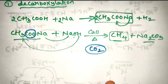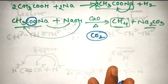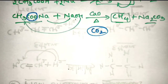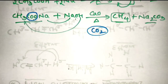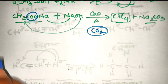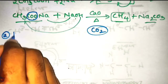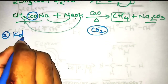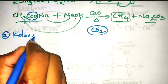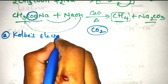That is called decarboxylation — because in this reaction, carbon dioxide comes out. One more method: by using the sodium salt of carboxylic acid, we are going to prepare alkanes. This method is also called Kolbe's electrolytic method.